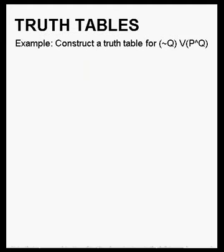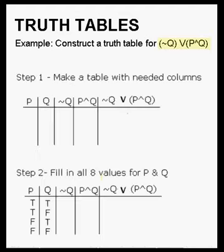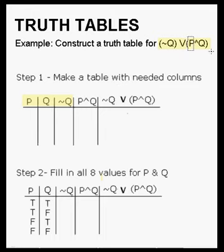Let's construct a table for something a little more complicated. We are going to do the table for NOT Q OR both P and Q. Our first step is to create a table with columns for P and Q, but we also need a column for the negation of Q, a column for the part P and Q, and then finally a column for the whole statement. You need all the components and then a final column for the whole statement.